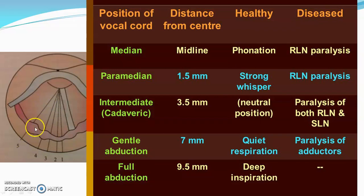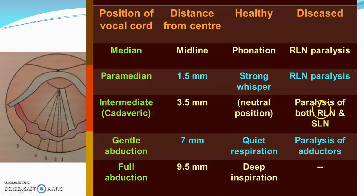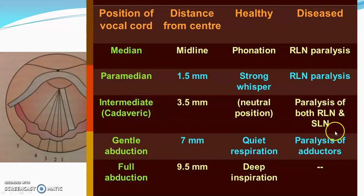In recurrent laryngeal nerve paralysis, the vocal cord can be in the median or paramedian position. Paralysis of both the superior laryngeal nerve and the recurrent laryngeal nerve results in the intermediate position — this also happens after death, which is why it is called the cadaveric position. Paralysis of adductors results in gentle abduction; full abduction only occurs during deep inspiration.